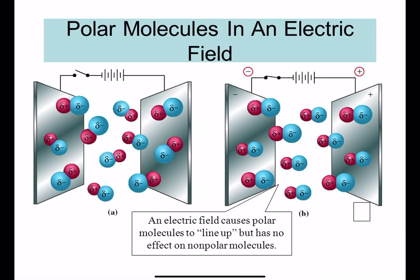When you look at polar molecules in an electric field, if the field is turned off, the molecules are oriented in different directions. But once you turn on the electric field, they orient themselves — the positives always orient to the negative plate, and the negatives always orient to the positive plate. That causes polar molecules to line up. If you had non-polar molecules, there's no charged region, so they don't line up even once the electric field is on.